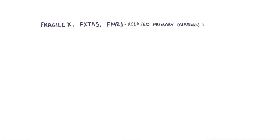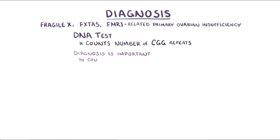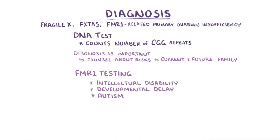Fragile X, FXTAS, and FMR1-related primary ovarian insufficiency are diagnosed by a DNA test that counts the number of CGG repeats. It's important to make the diagnosis in order to counsel the individual about the risks of the diseases in current and future family members. FMR1 testing is often done for individuals with intellectual disability, developmental delay, or autism, and carrier testing can be done for pregnant women.